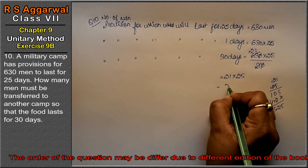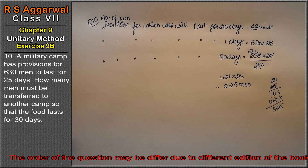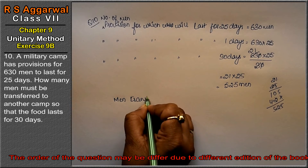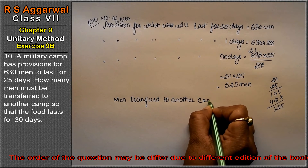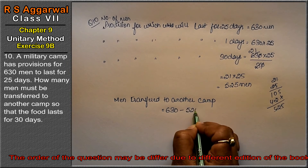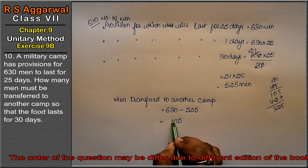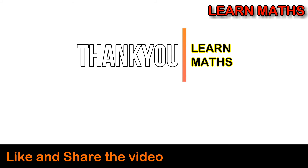That means 525 men can stay for 30 days. So the number of men that must be transferred to another camp equals 630 minus 525, which means 105 men must be transferred. Thank you — if you understand the step-by-step solution in this video, please subscribe to my channel on maths and share it with your friends.